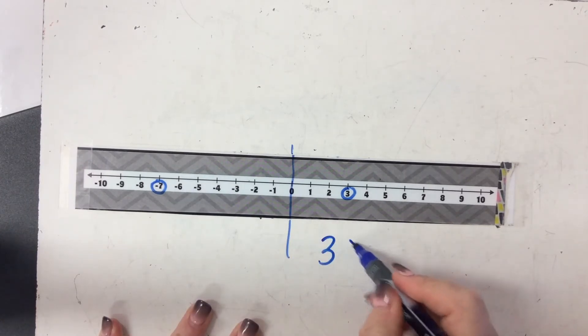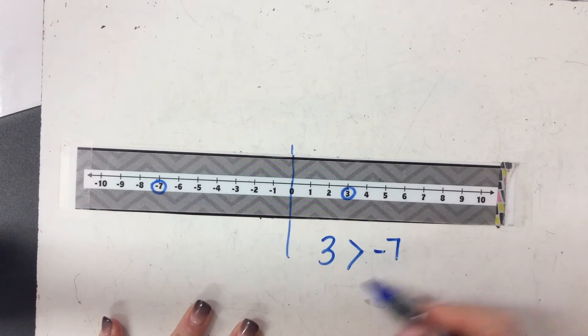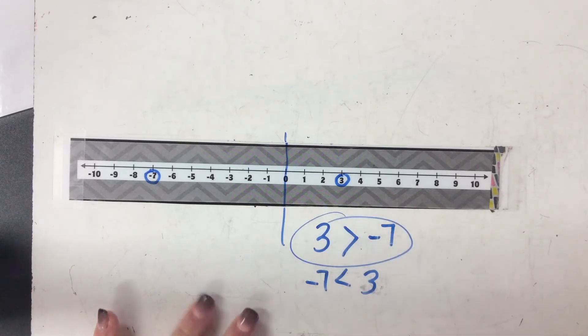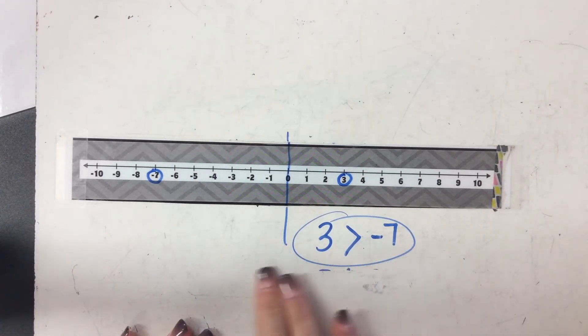Well, we write this is three is greater than negative seven, or we could say negative seven is less than three. But our problem has it worded like this one. Now it's important that we know not to use alligator mouth. That is actually baby stuff that does not help you in middle school because it's going to get harder and you have to know the words.